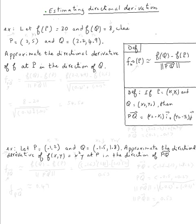The topic is estimating the directional derivative. Let's do the first example. Let f of point p equal twenty and f of q equal eight, where p is equal to (2, 5) and q is equal to (2.2, 4.9). The question is: approximate the directional derivative of f at p in the direction of q.